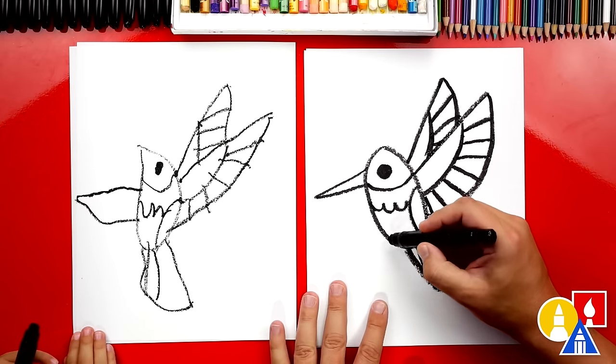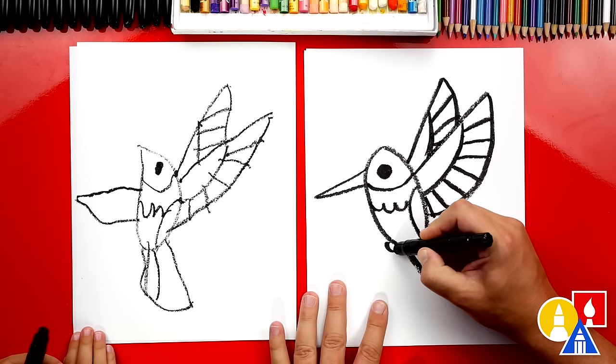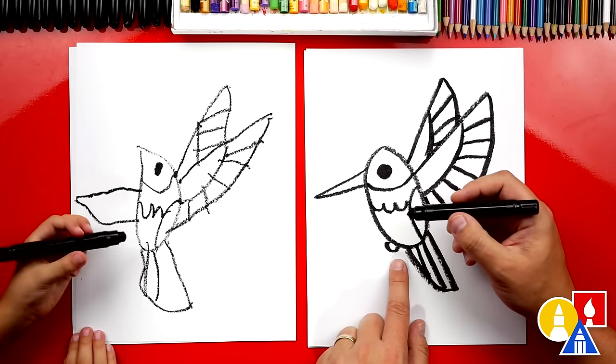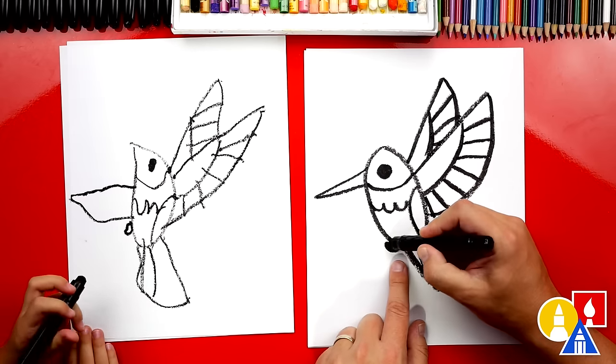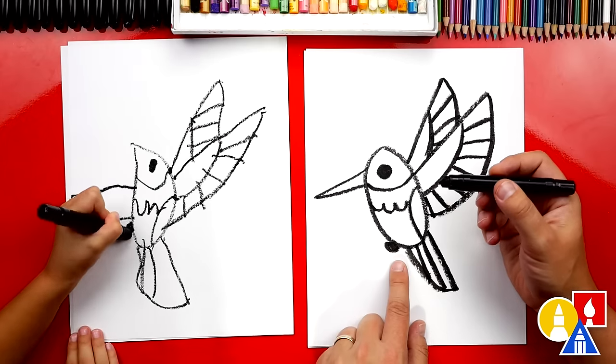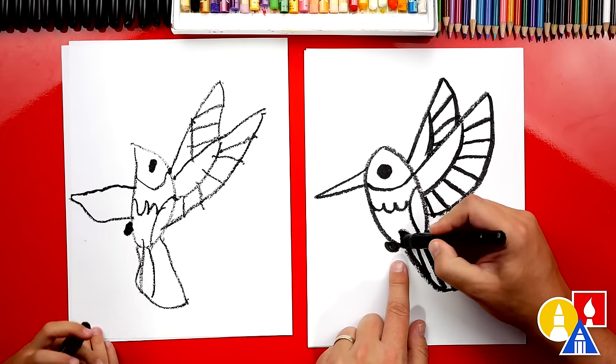Now we can also draw the feet. When they're flying they got their feet tucked up into their body. So we could draw a little oval right there and we could color it in. And let's draw another oval right here and color it in too.